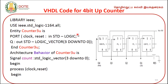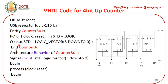Then, the outputs Q1, Q2, Q3, Q4 are declared. Q1 is the LSB and Q4 is the MSB. In the program, we declare: q: std_logic_vector(3 downto 0), since we are using 4 bits. After closing the bracket, we add a semicolon. Then we close the entity with: end counter3;